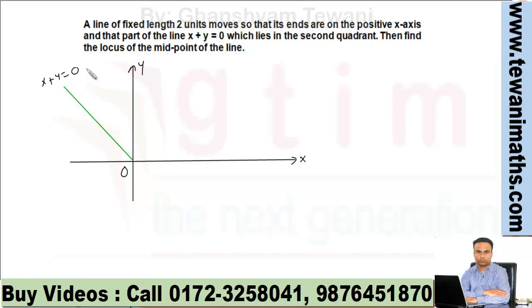Now there is a line of fixed length 2 units that moves such that one end is on the x-axis and the other end on this line. We have to find the locus of this midpoint.